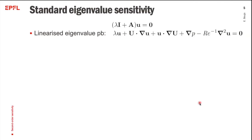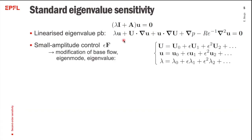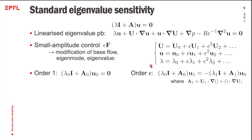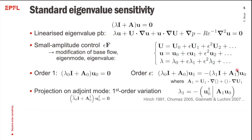Here is some theory to explain how it works. If you have a linearized eigenvalue problem for eigenvalue λ and eigenmode u, linearized around the base flow U, and you introduce a small-amplitude control f, you modify not only the base flow but also the eigenmode and the eigenvalue, which can be written as a series expansion. Collecting terms at order ε, you get a relation where the operator A1 depends only on the first-order base flow modification.